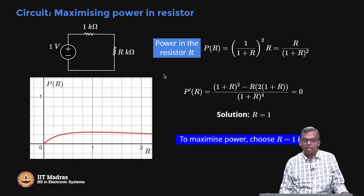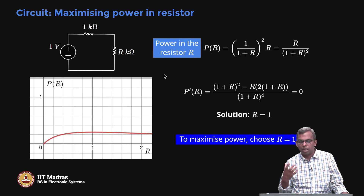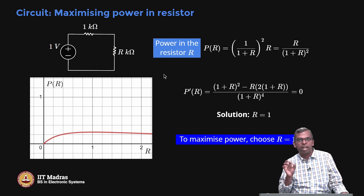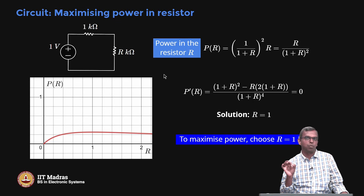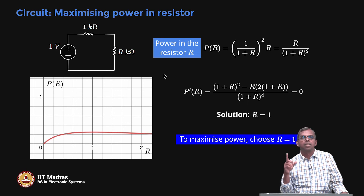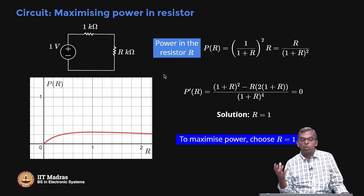That is the end of this lecture. To quickly summarize: we looked at local maxima and minima, how to define them precisely using delta, and how to connect the derivative going to 0 to local maxima or minima. Once you have that result, you can apply it in practice across many different scenarios to evaluate local maxima and minima. Thank you.